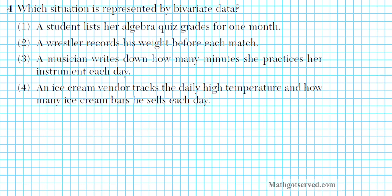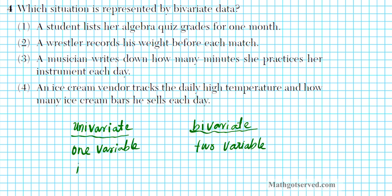Let's take a look at problem 4. It says, which situation is represented by bivariate data? So there are two types of data. We have univariate and bivariate. Let's distinguish them real quick. Univariate is just one variable and bivariate involves two variables. What do we use these two types of data for? Univariate is just informational or descriptive. It tells you like a history.